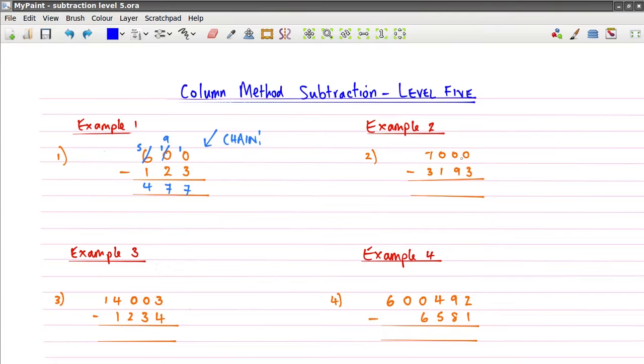So likewise, start with the units column 0 take away 3. Well, 0 take away 3, 0 is too small, so we're going to have to carry. But if we look to our left, there's nothing to carry from. So let's look to our left again. Oh, there's nothing to carry from either. So you just keep going until you find a number that you can carry from.